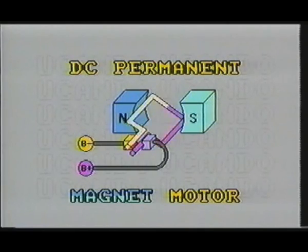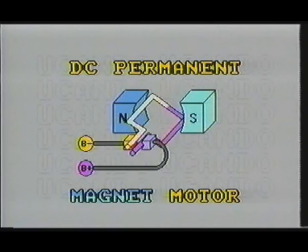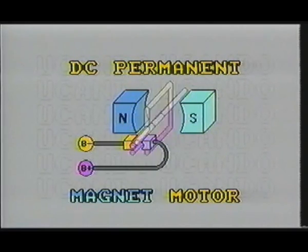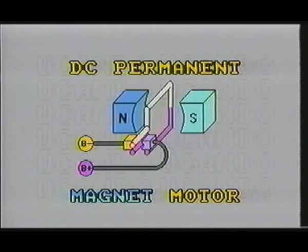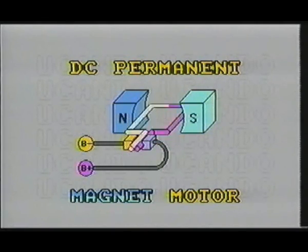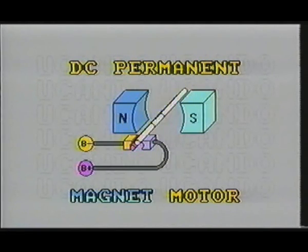Notice that the power source feeding the motor brushes does not change polarity. Instead, as the rotor assembly rotates, the wires connected to the rotor coil come in contact with the opposite brushes, thus changing the magnetic field being generated within the rotor coil assembly. When the magnetic flux field of the rotor changes,